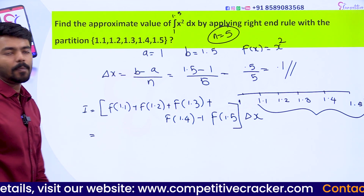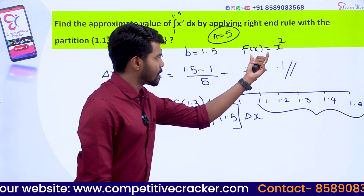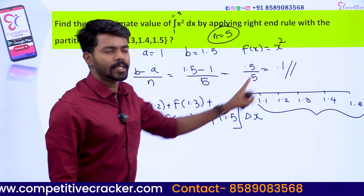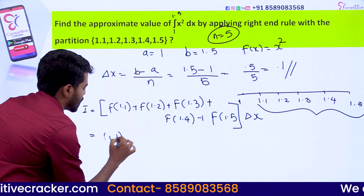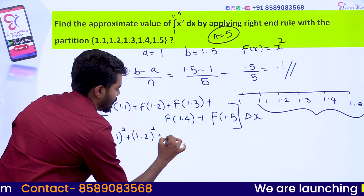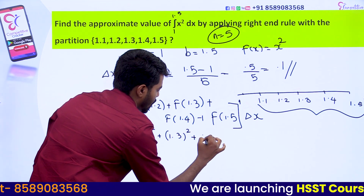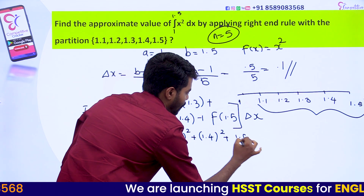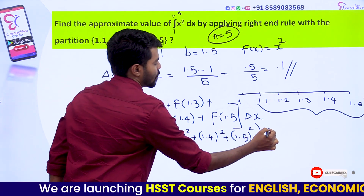That is equal to f(1.1) where f(x) = x². So f(1.1) = 1.1², plus 1.2², plus 1.3², plus 1.4², plus 1.5², all multiplied by delta x equal to 0.1.